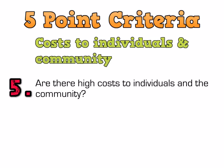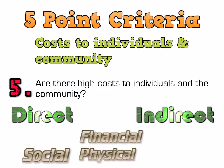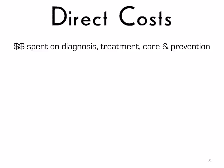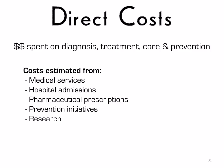The last factor in the criteria is cost to the individuals and the community. Costs can be direct or indirect, and can be financial, physical, social, and emotional. Direct costs relate to money spent on diagnosis, treatment, care, and prevention at the individual level, as well as medical services, hospitalisations, pharmaceutical prescriptions, prevention campaigns, research, screening, and education at the community level. If cardiovascular disease is costing the government a lot of money to treat and hospitalise patients, then it makes sense to put strategies in place to reduce it and make it a priority.